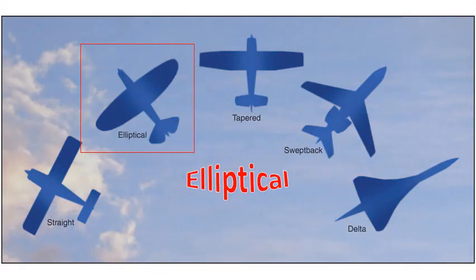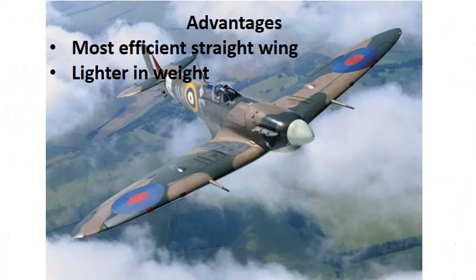The last type of straight wing we're going to look at is the elliptical wing, which is shaped elliptically — somewhat like an oval. The advantage of this is it is the most efficient of all the straight wings; it has the highest speed capabilities and creates the least amount of drag. It's also lighter in weight — two aircraft with a 20-foot wingspan, the one with the elliptical wing has used less material because the edges are kind of trimmed off.